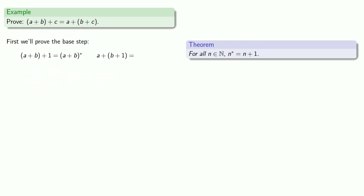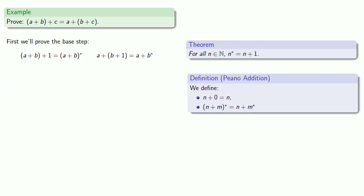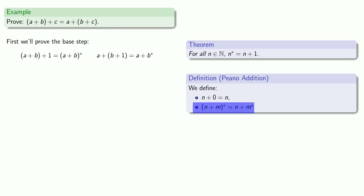Similarly, a plus b plus one is the same as a plus the successor of b. Definitions are the whole of mathematics, all else is commentary. Our definition of addition says that a plus the successor of b is the same as the successor of a plus b. So a plus b plus one is the same as a plus b plus one.